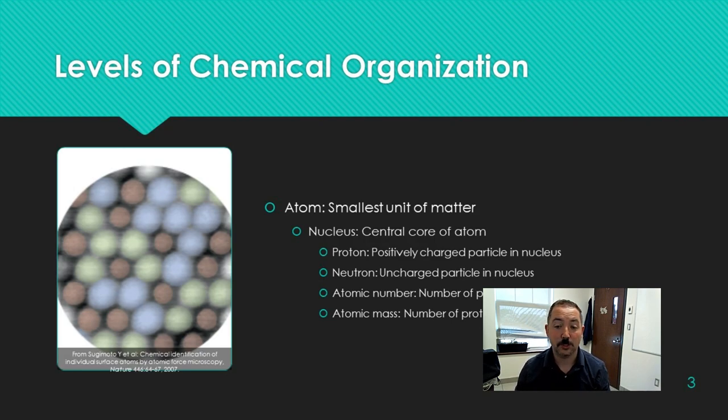Basically, an atom has two parts, a nucleus, which is made up of neutrons and protons, and then some orbiting electrons. They float around outside. Now these electrons will be really important when it comes to chemical bonds a little bit later, so don't forget about them.